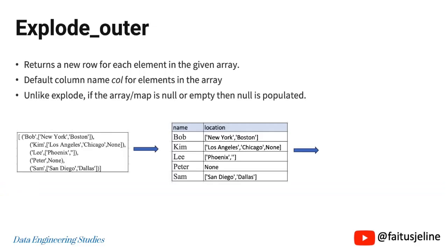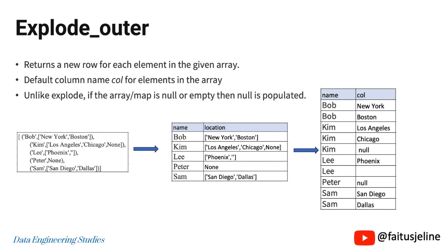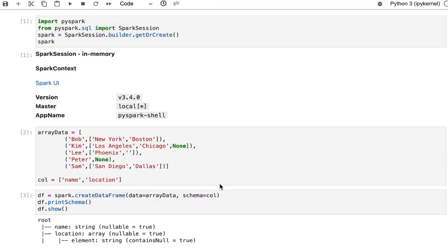Now coming to the ExplodeOuter function: if the array or map is null or empty, ExplodeOuter returns null instead of eliminating the row. In this example, Peter's array is null, so when we pass location — which is an array — to the ExplodeOuter function, null will be populated for Peter. Let's see the practical implementation of ExplodeOuter using an input array.